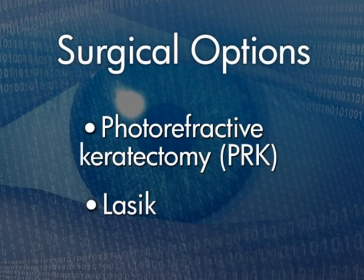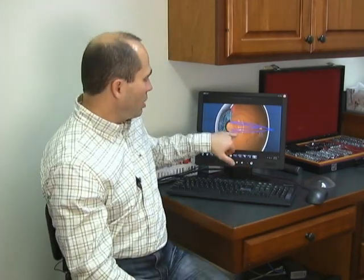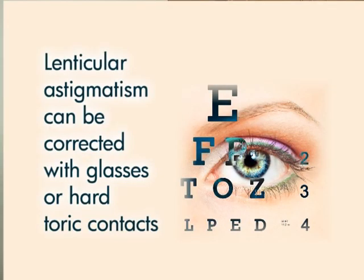We've talked about corneal astigmatism up to this point. There is one other type that's more rare and less commonly seen — it's called lenticular astigmatism. It's in the natural lens of the eye, right behind the pupil. With lenticular astigmatism, we can either use glasses to correct it, or a hard lens with a toric surface — a two-curved surface cut on the front of the lens. Most soft lenses will not correct lenticular astigmatism well, especially at any significant magnitude or power.